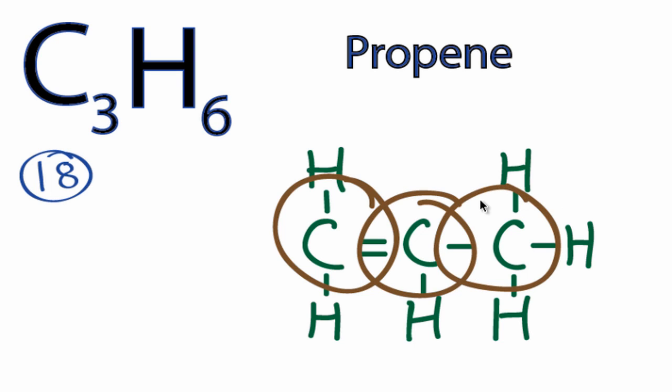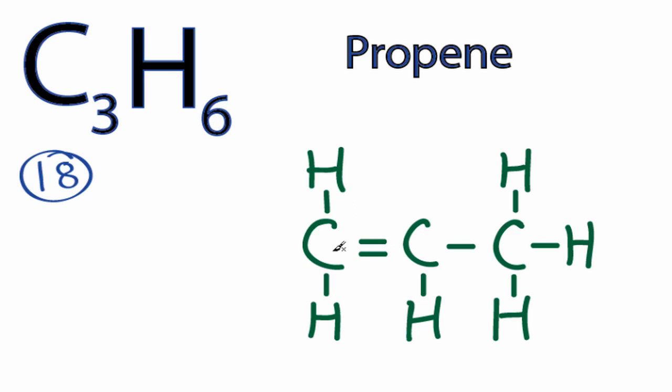And then the hydrogens, they all have a single bond themselves as well. So they have two valence electrons, and their outer shells are full. Again, we've used 18 valence electrons. We've satisfied the octets for each of the atoms. So this is the other possible structure for C3H6.